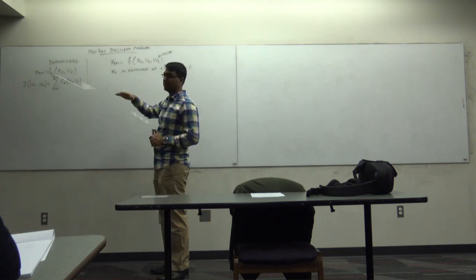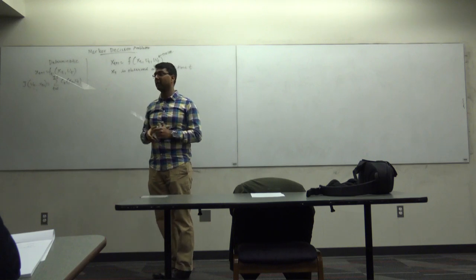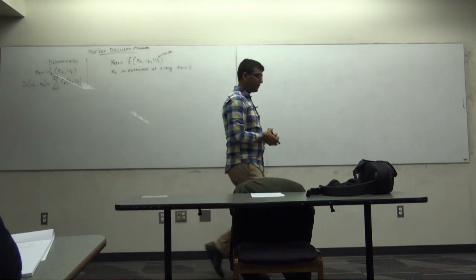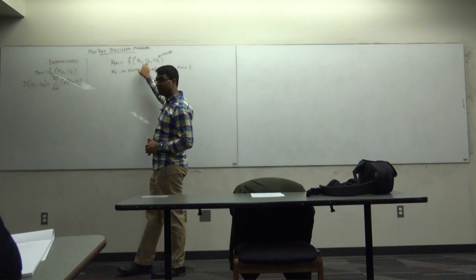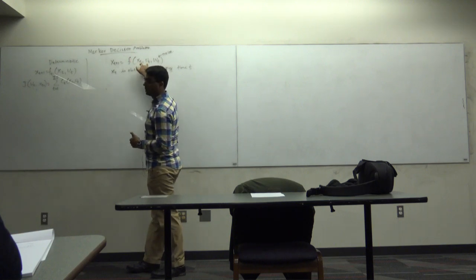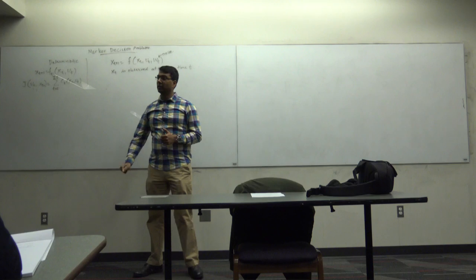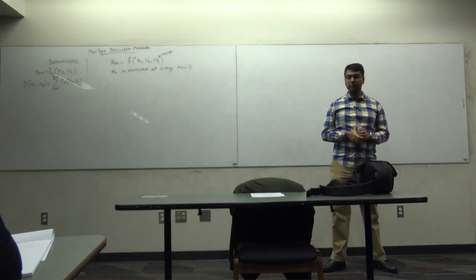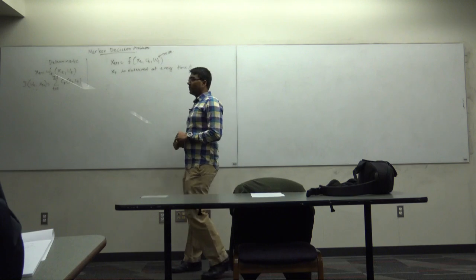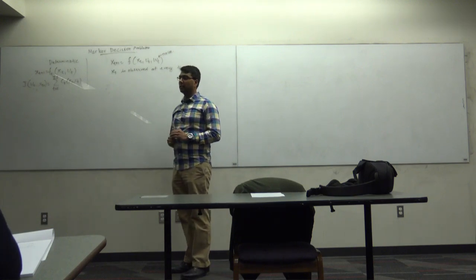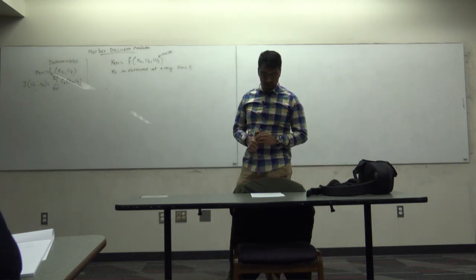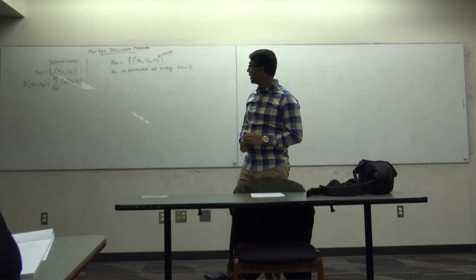A Markov chain has no u_t — it's just a stochastic process with no decision variable. This is called a Markov decision problem because you have an action to take. There are connections between Markov chains and MDPs, but we won't cover them in this class.